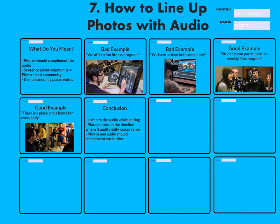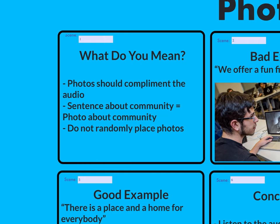For step seven, I want to talk about how to line up your photos with audio. This is a vague topic, so I'll do my best to describe what I mean — your photos should complement the audio. Remember how I talked about recording photos and audio to complement and highlight the scholars program? You also want them to match with the video, so if you are going over a sentence about community in the timeline, you want a photo about community to pop up.